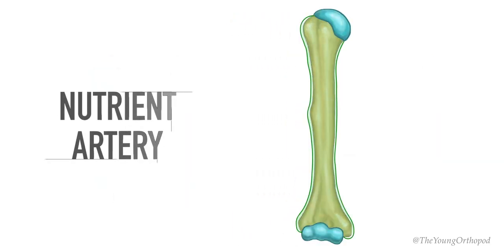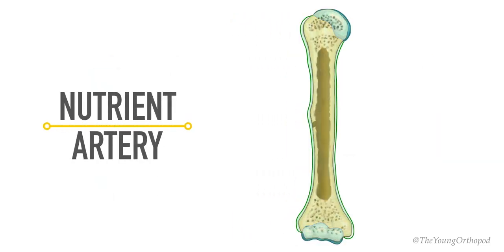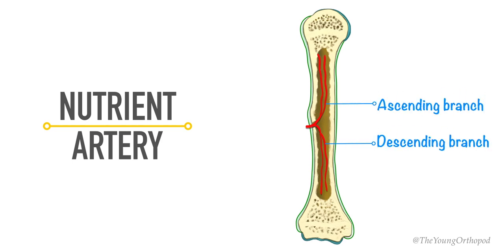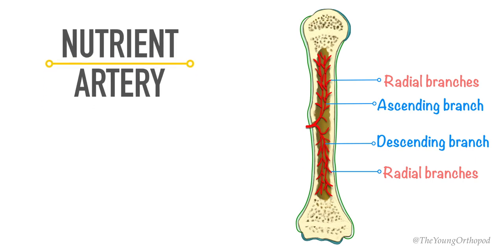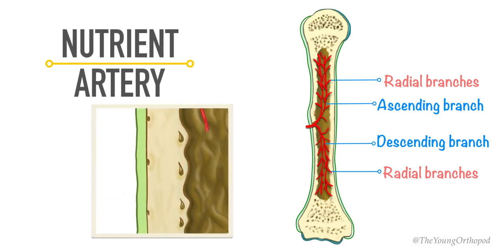The nutrient arteries form a high-pressure system derived from major systemic arteries. The nutrient artery enters the long bone shaft, or diaphysis, through the nutrient foramen. In the medullary cavity, it divides into ascending and descending branches which extend longitudinally along the axis of the long bone. These branches give off a number of smaller lateral-oriented parallel vessels called radial branches, which supply the bone marrow and the inner third of the compact bone of the diaphysis.